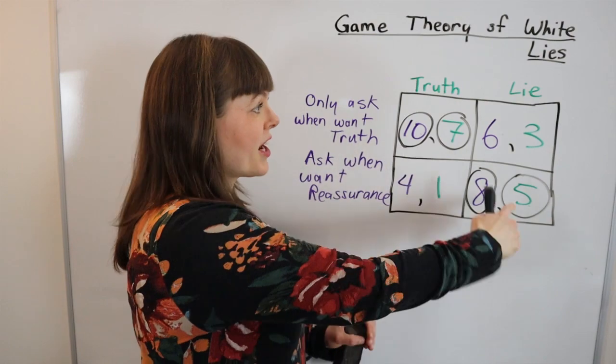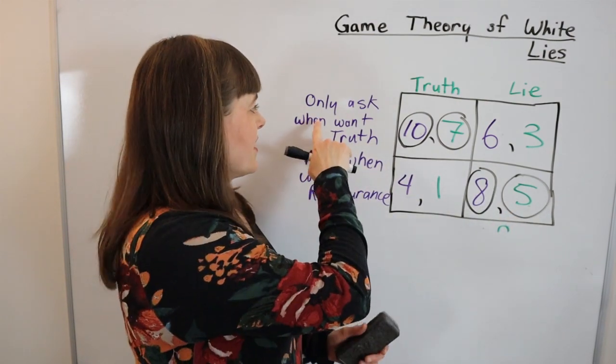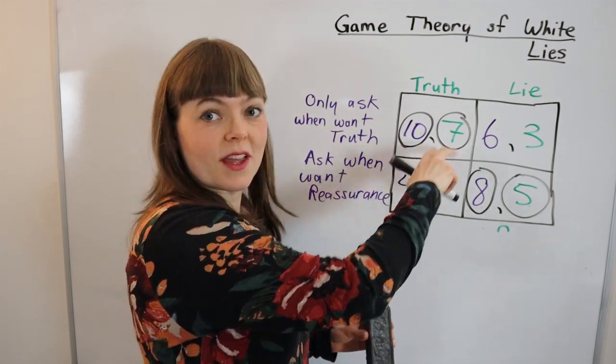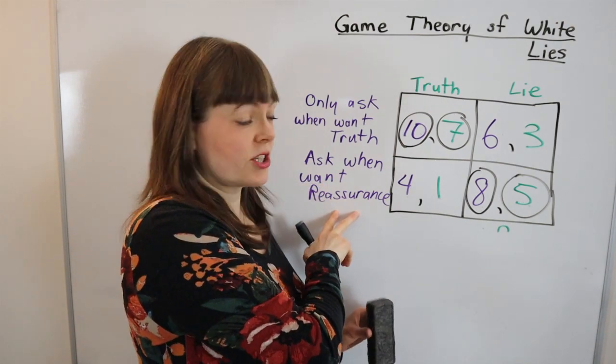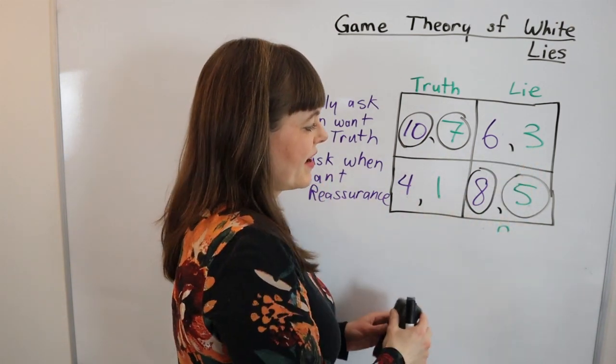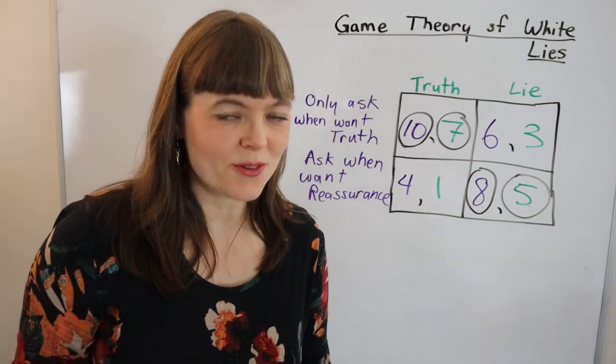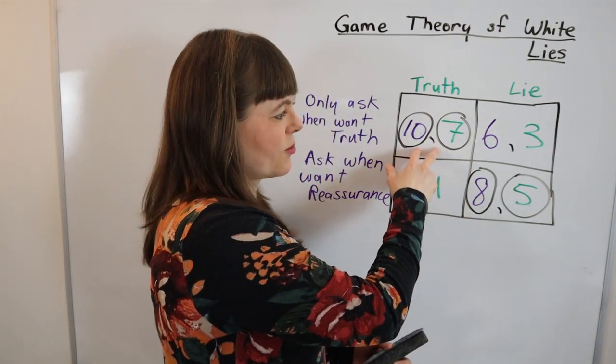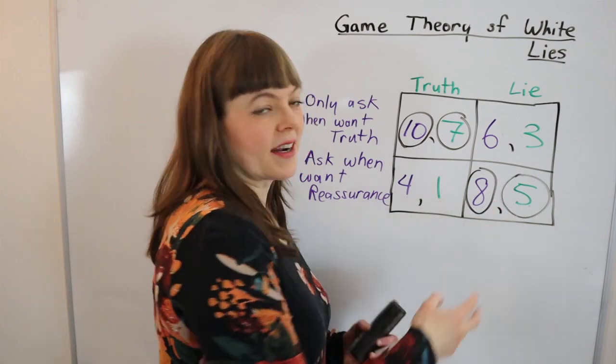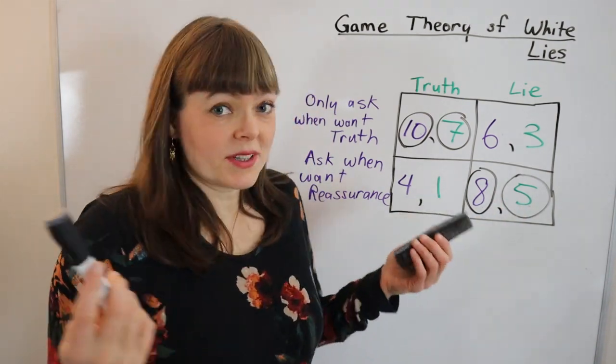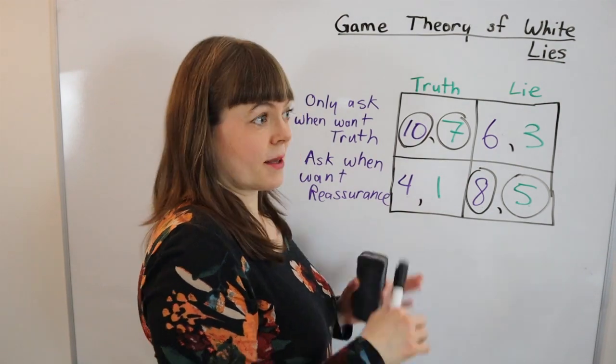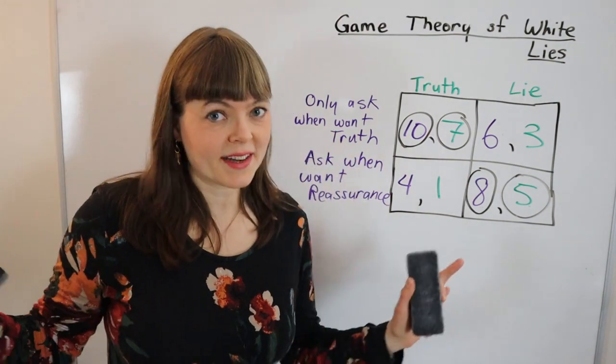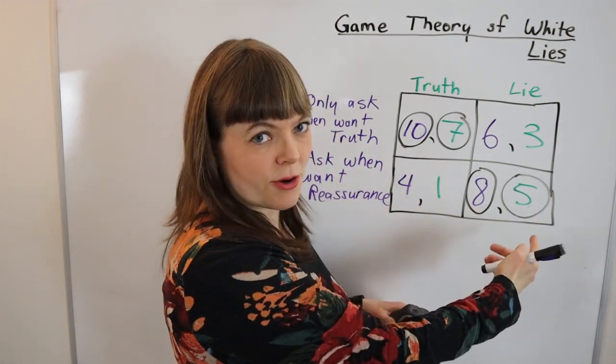And we see now that there are two Nash equilibriums. One is that she only asks when she wants the truth and he tells the truth. The other is she asks when she wants reassurance and he lies. And of course this is what we see in relationships - some relationships tend toward this, some relationships tend toward this. And the reason here of course is because if you end up in one of these other boxes, somebody is going to be like 'whoa I don't want that to happen again' and they're going to change their behavior.